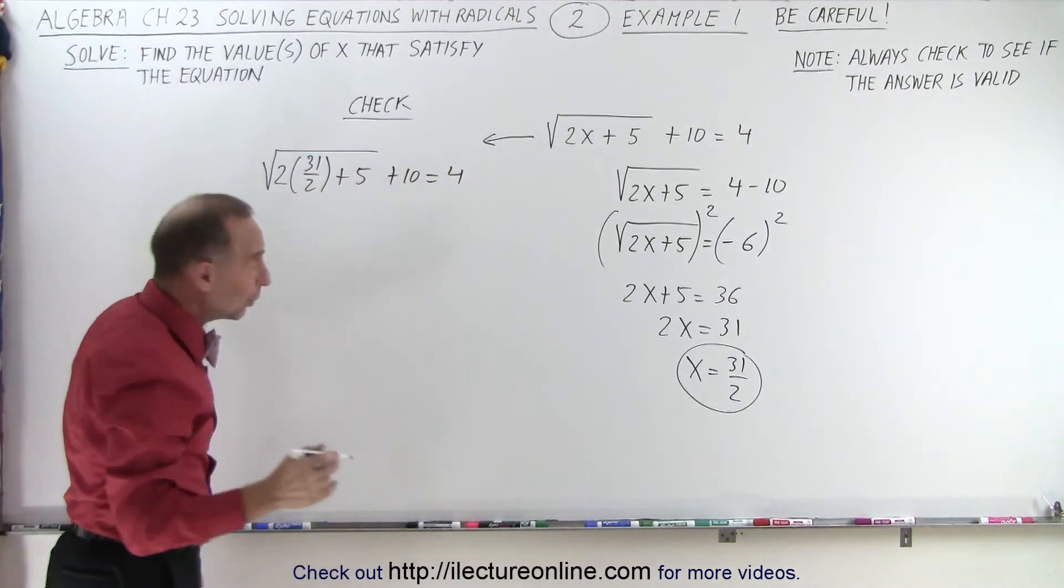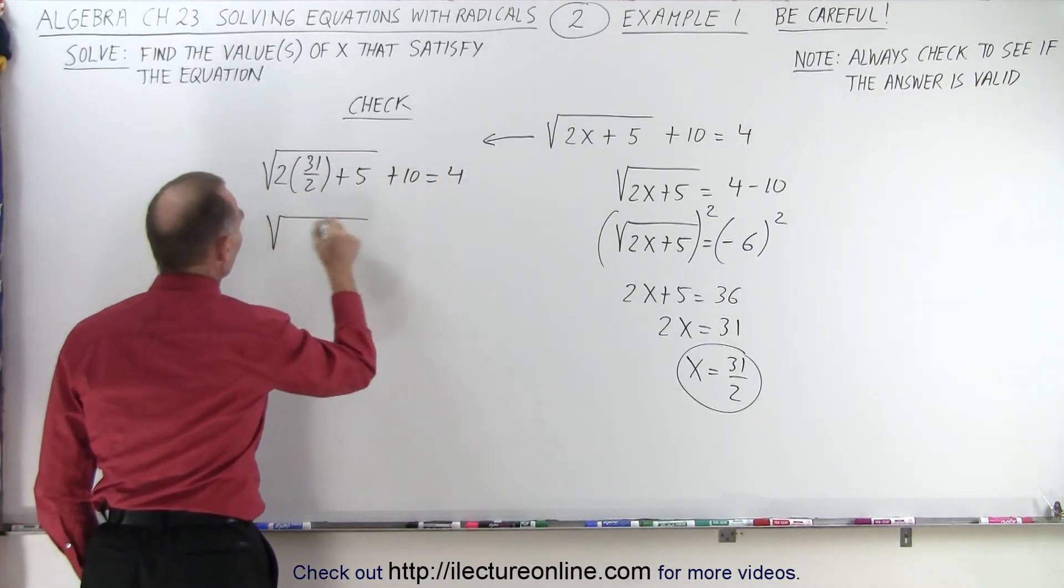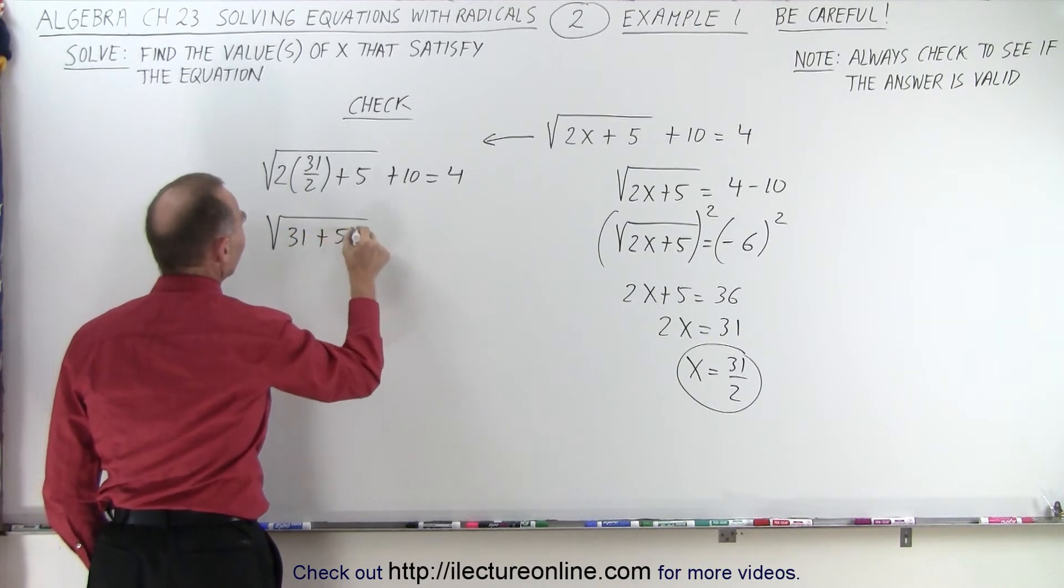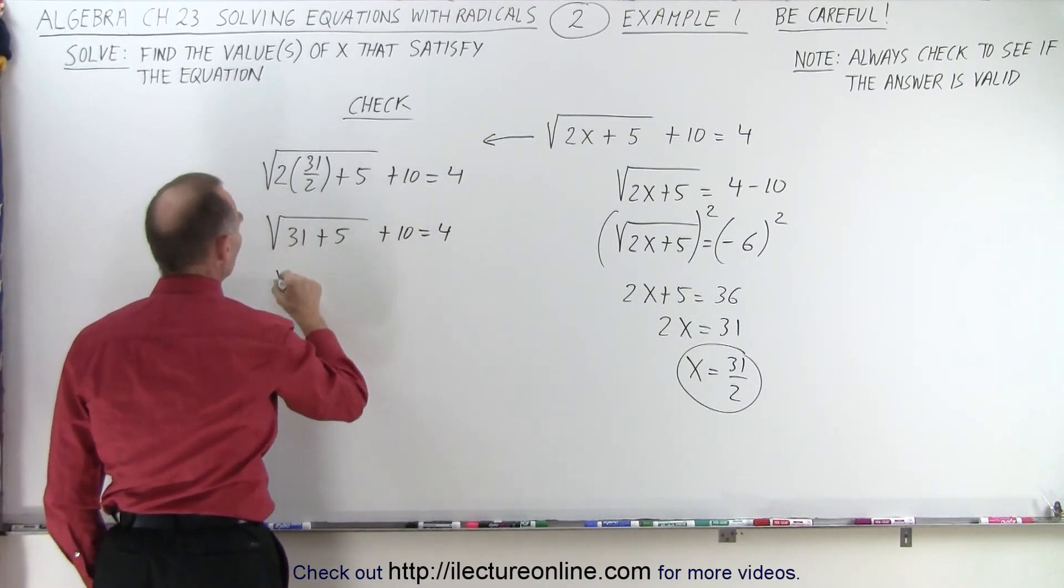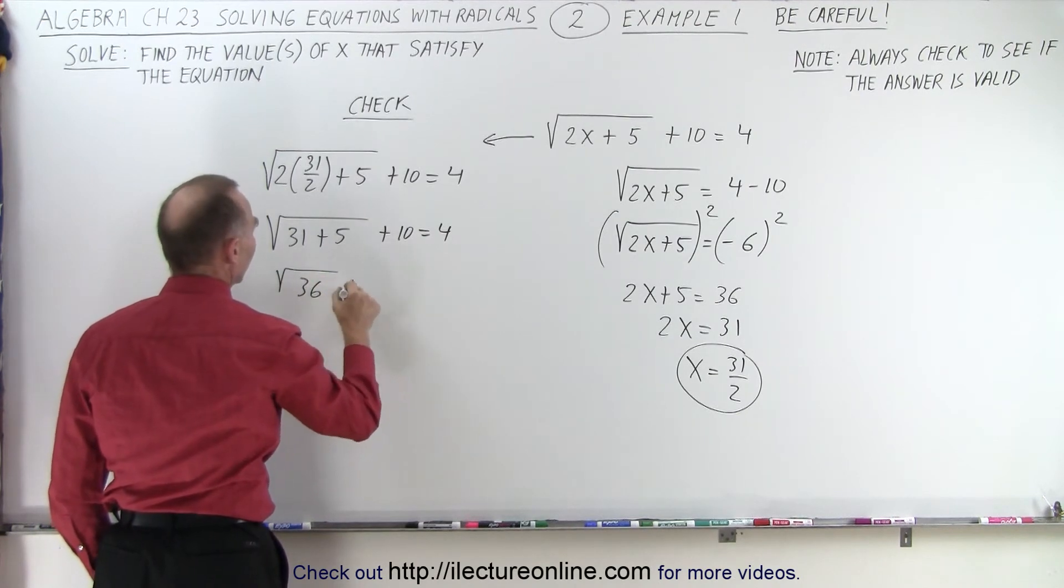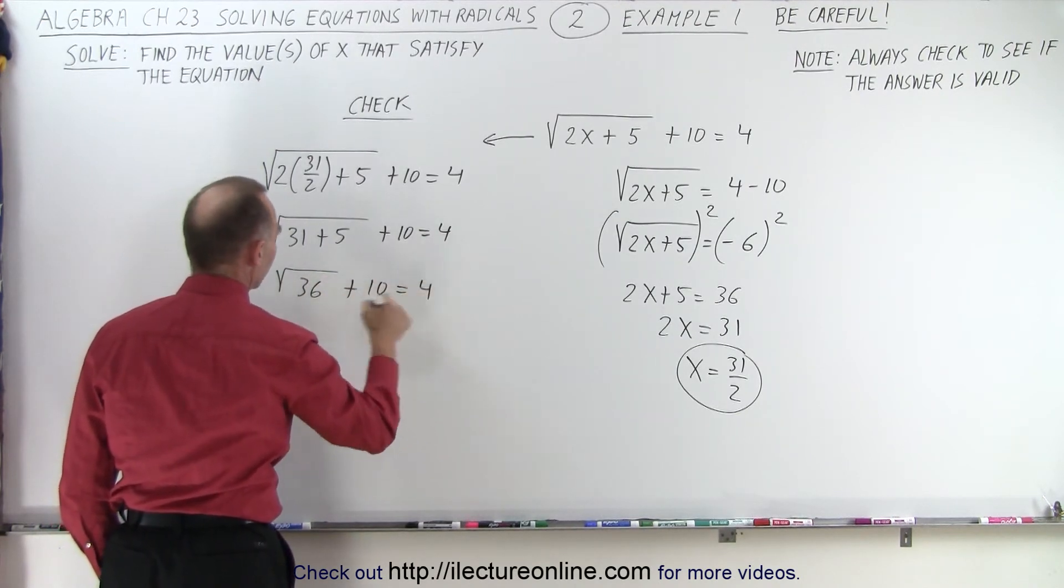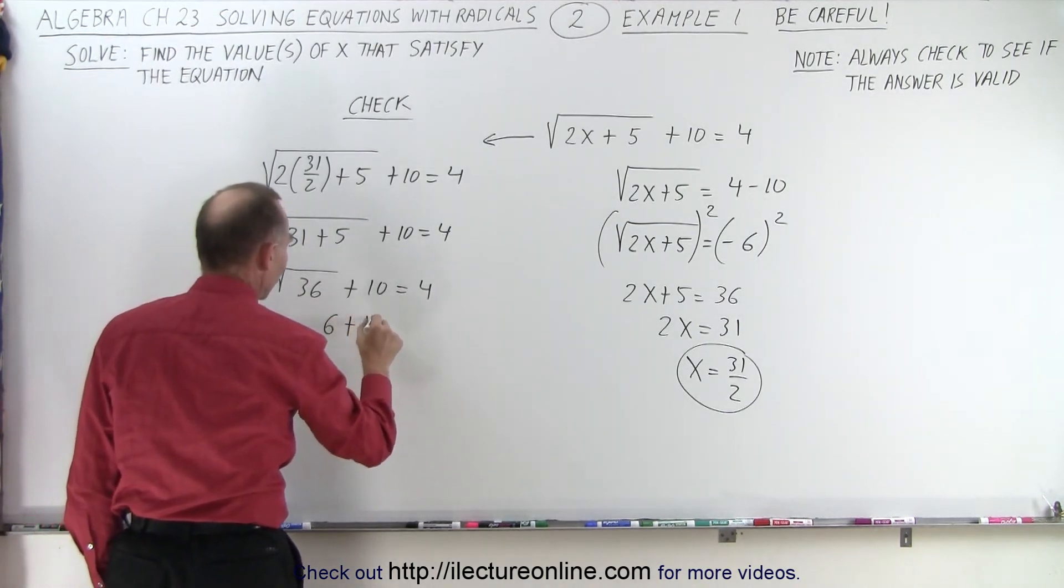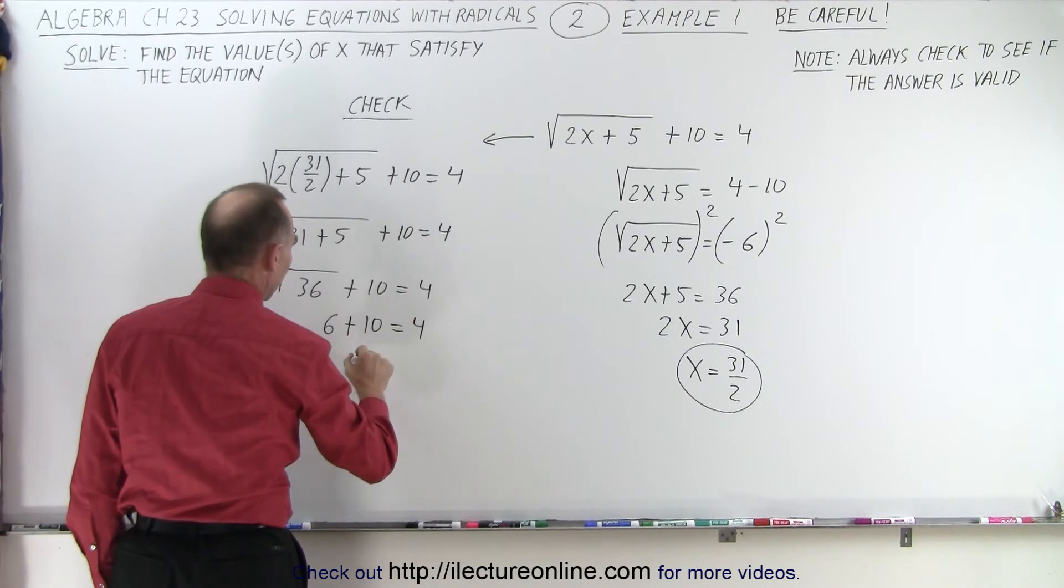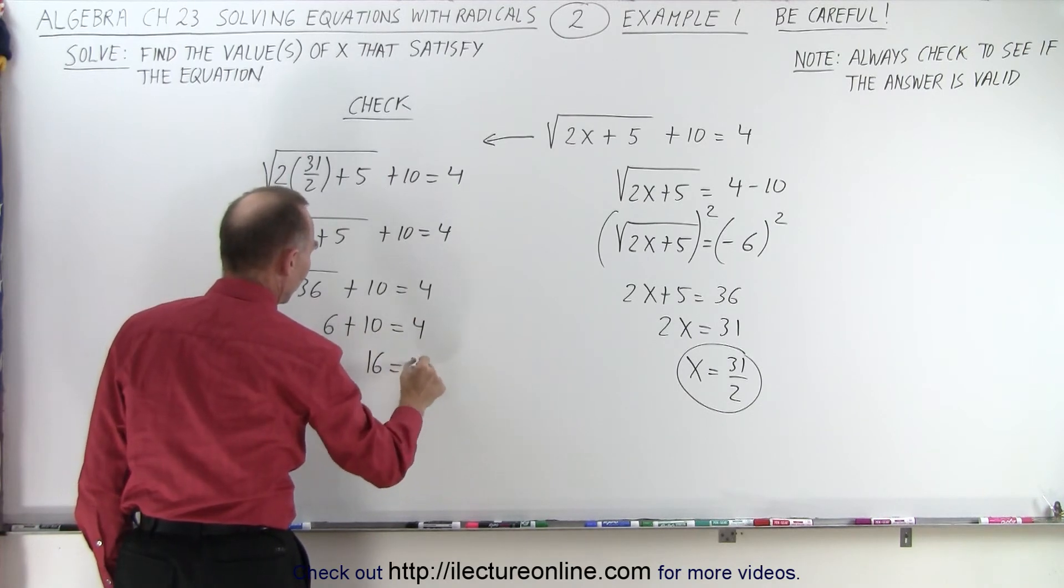Since the 2's cancel, we get the square root of 31 plus 5 plus 10 equals 4. And then here, we have the square root of 36 plus 10 equals 4. Now, the square root of 36, by definition, is equal to 6. So we get 6 plus 10 equals 4. And so we get 16 equals 4,